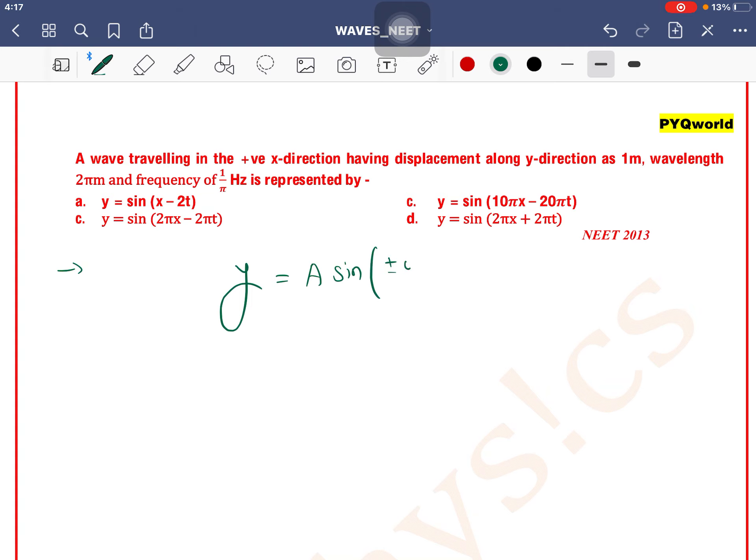be written as A sin(ωt ± kx), right? If here plus sign, here minus; here minus, here plus, right? Okay.